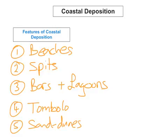It doesn't really matter which one you learn, but you must know one for your exam. The one I suggest you learn is bars and lagoons, because there's a lot of information you can write on it. It's the same as a spit but there's a little bit more to it, so I think bars and lagoons is a very good coastal deposition feature to explain. Plus the diagram is quite easy to draw.